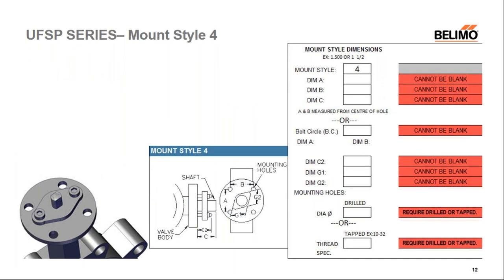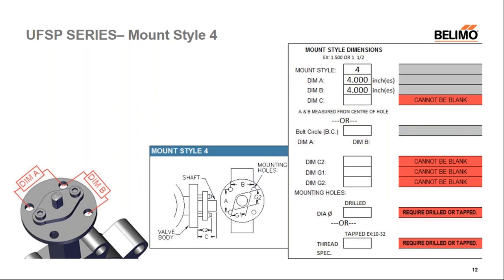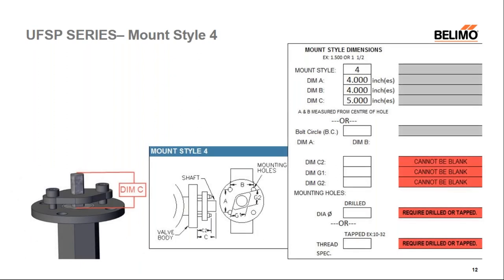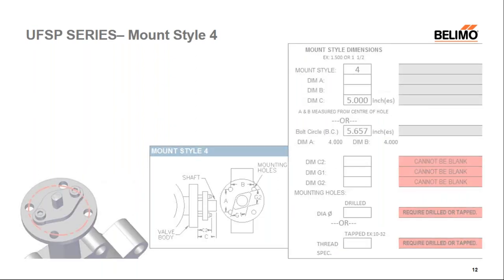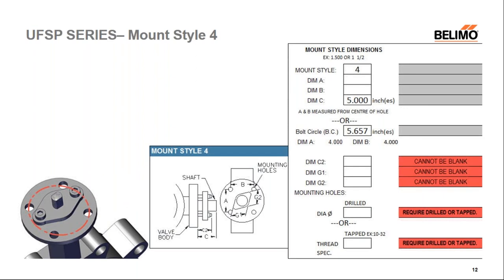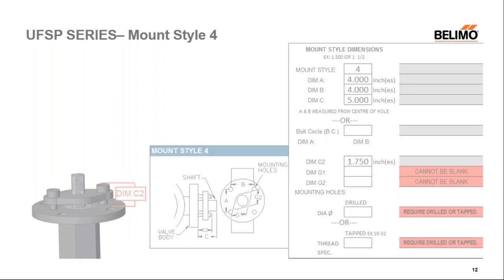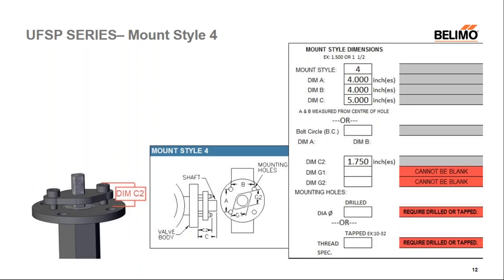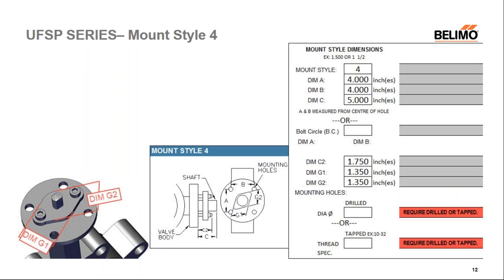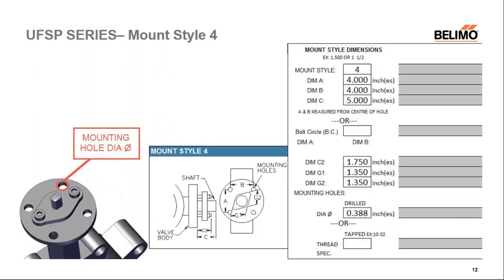Mount style four is a valve with a packing gland. Dimension A and B are from center of mounting hole to center of mounting hole. Dimension C is from the top of the shaft down to the flange — the overall height of the shaft. The bolt circle can be used instead of dimension A and B. Dimension C2 is the flange to the top of the packing gland. Dimensions G1 and G2 are the flat-to-flat measurements on the packing gland. The mounting hole diameter in this case is 0.388 inches.